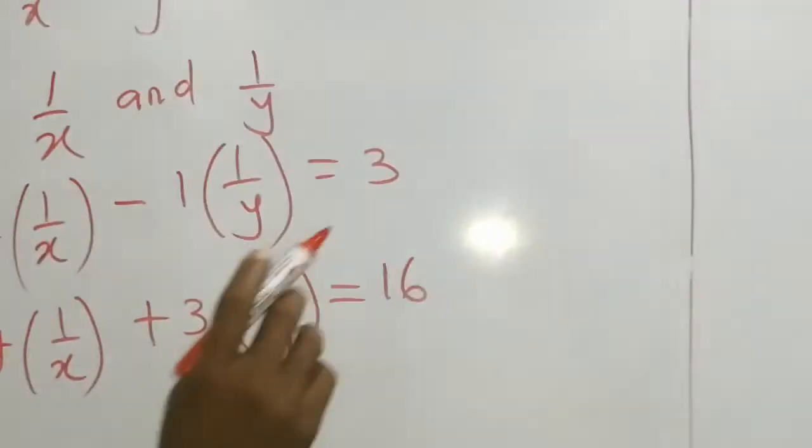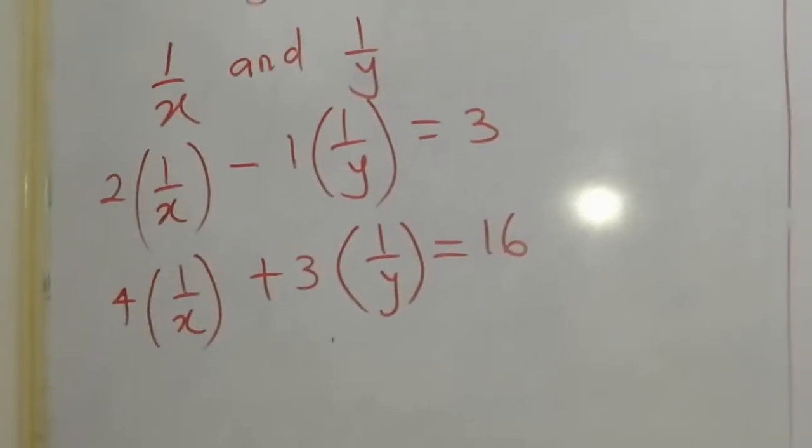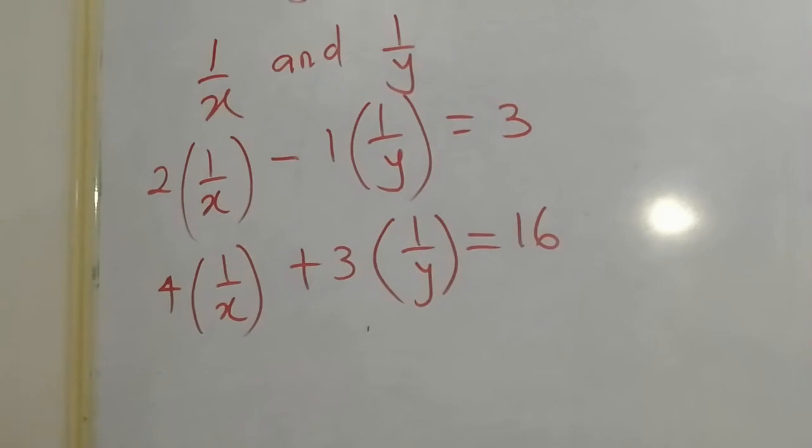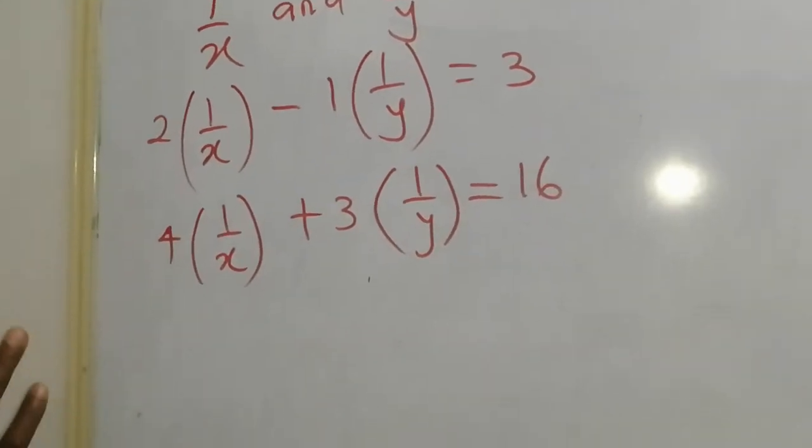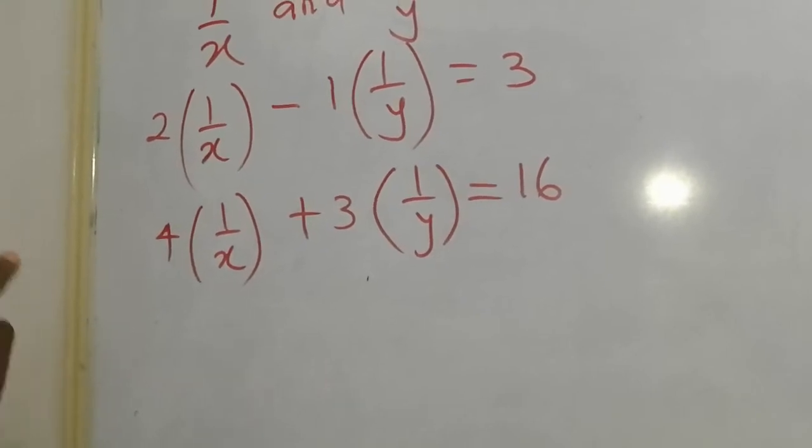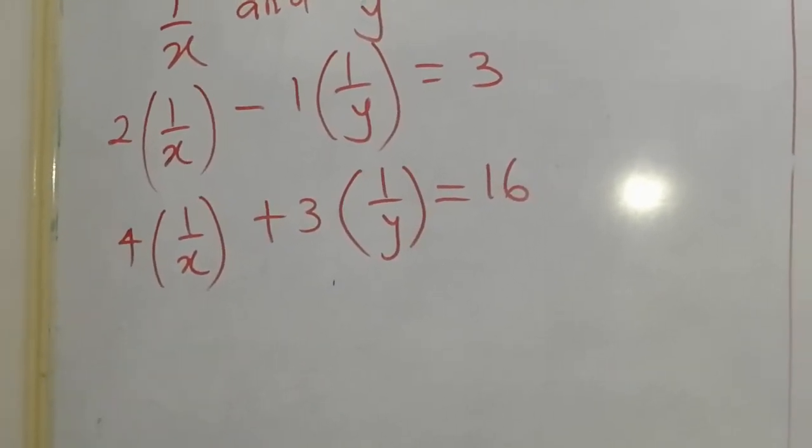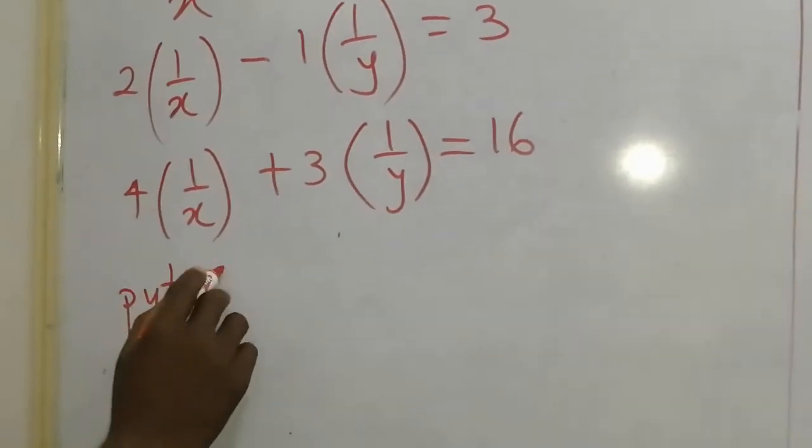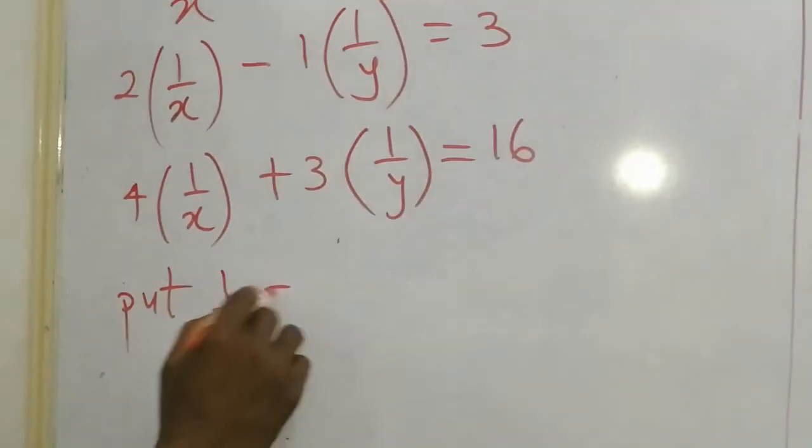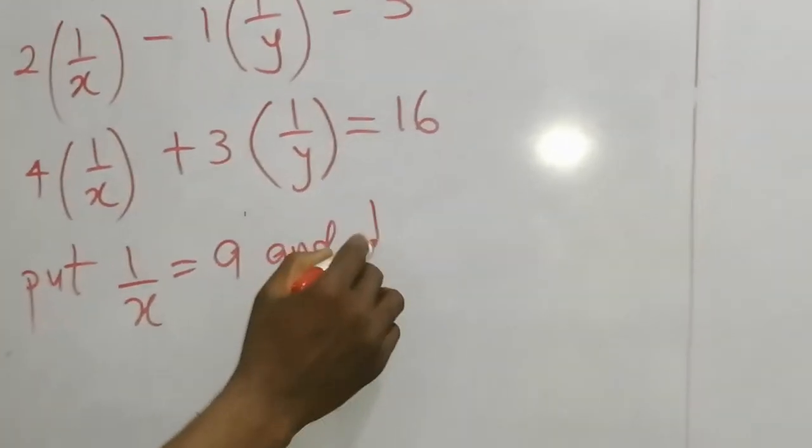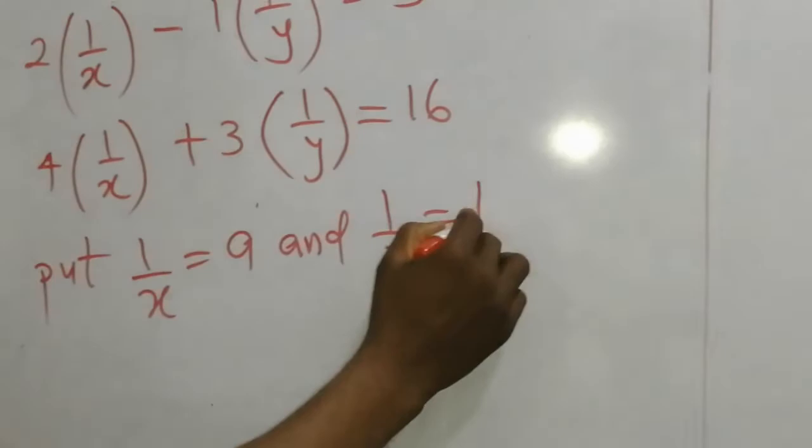What do you do with 1 all over x and 1 all over y? Instead of using the unknown x, you are using 1 all over x. Instead of using unknown y, you are using 1 all over y. So you are going to put 1 all over x as a and 1 all over y as b.